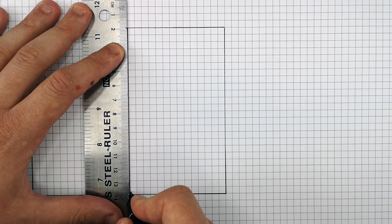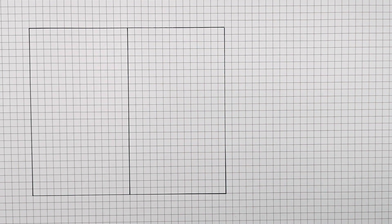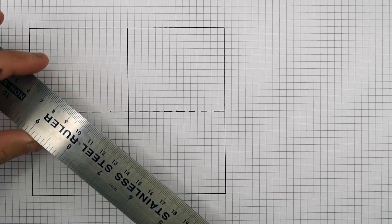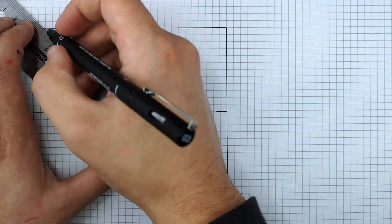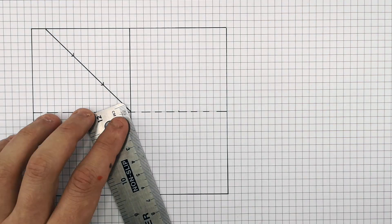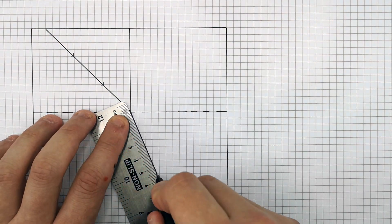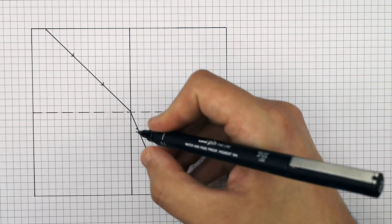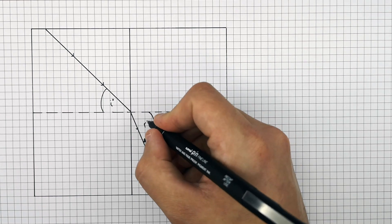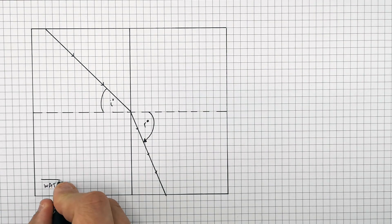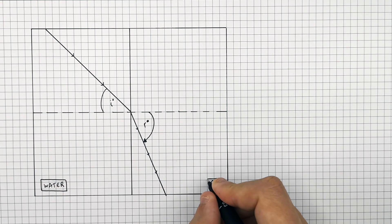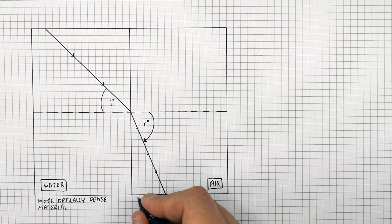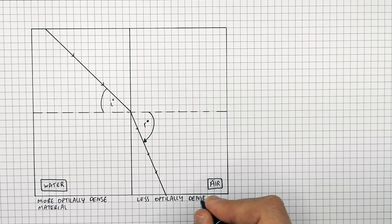This is the boundary between two materials of different optical density, and this is the normal line at 90 degrees to the boundary. The incident ray is travelling through water and approaches the boundary. It refracts and bends away from the normal as it travels across the boundary into air, because it speeds up. Water is a more optically dense material, and air is a less optically dense material.